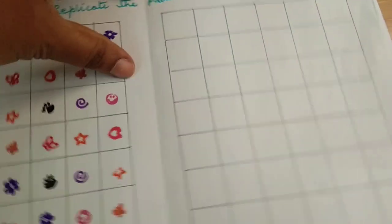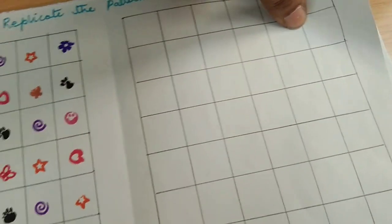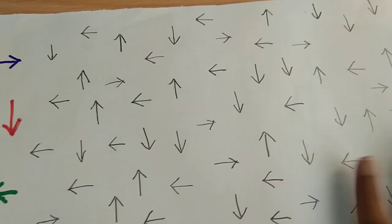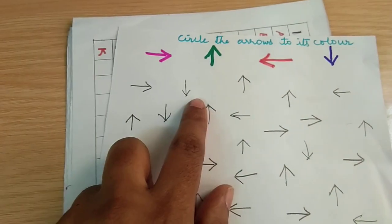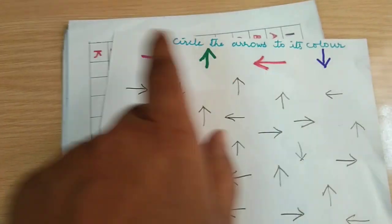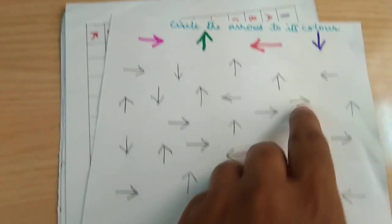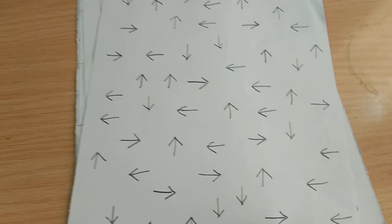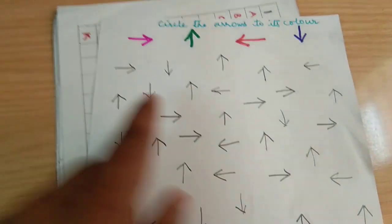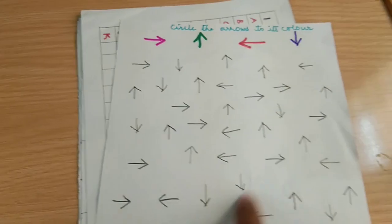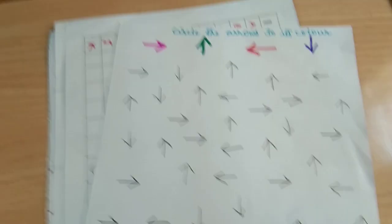This one is directions, circle the arrows to its color. I have given four directions: right, up, left and downwards, and all randomly written the arrow marks here. The child has to choose this color sketch pen and wherever it is in the right direction, he is going to circle it. For four directions he is going to complete it.